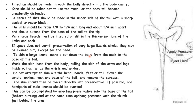To skin a large lizard, make a cut down the belly from the neck to the base of the tail. Work the skin loose from the body, pulling the skin of the arms and legs inside out. Do not attempt to skin out the ankles, feet, or tail. Sever the wrist, ankles, neck, and base of the tail and remove the carcass. The skin should then be placed directly into the preservative.